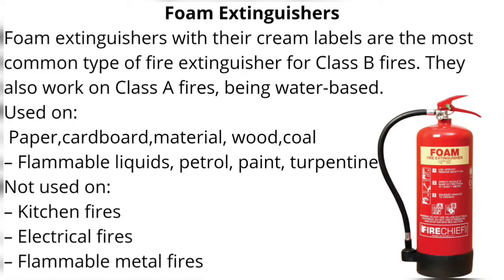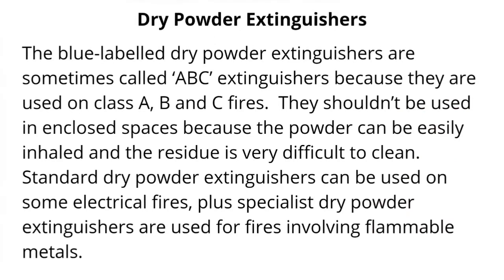Foam extinguishers, with their cream labels, are the most common type of fire extinguisher for Class B fires. They also work on Class A fires, being water-based. Foam extinguishers are used on paper, cardboard, wood, coal, plus flammable liquids such as petrol, paint, and turpentine. Not used on kitchen fires, electrical fires, or flammable metal fires.